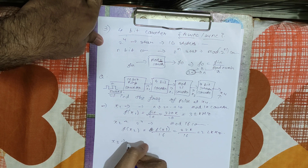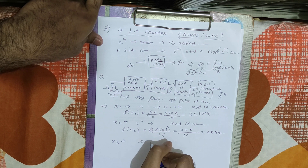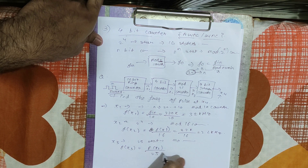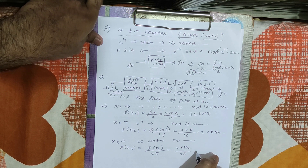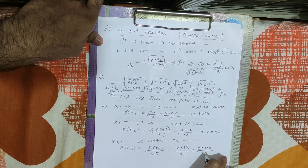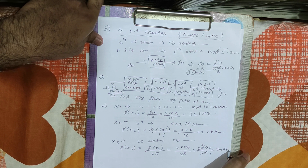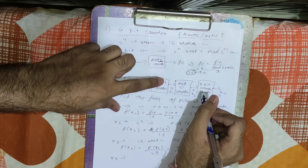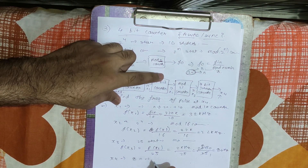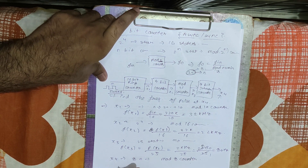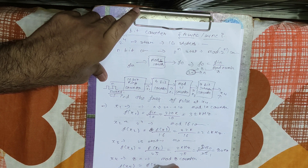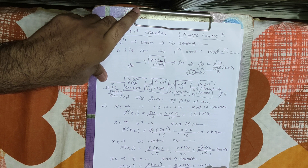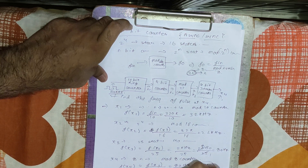At stage X3, the counter is a mod-25 counter, so frequency at X3 = f_X2 / 25 = 2 kHz / 25 = 2000 / 25 = 80 Hz. At stage X4, the counter is a 4-bit Johnson counter, which counts 2 × 4 = 8 states, so it is a mod-8 counter. Frequency at X4 = f_X3 / 8 = 80 Hz / 8 = 10 Hz. So the output frequency at the final stage is 10 Hz.